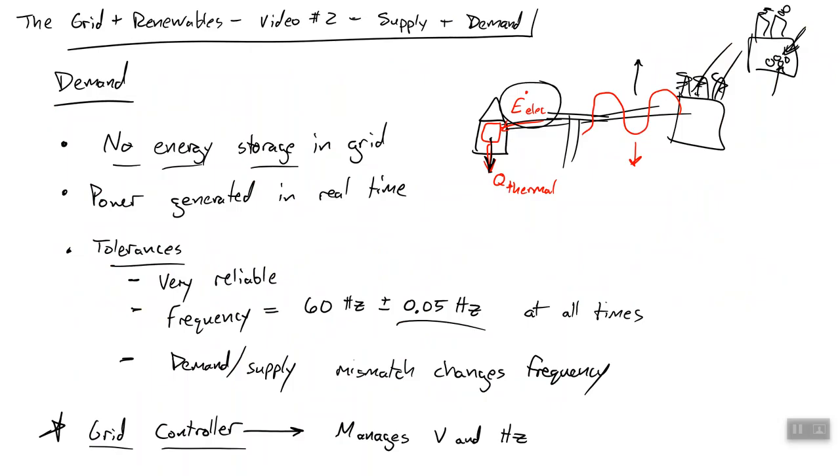Now, like we said, there's no energy storage in the grid. We need to meet that in real time. So how are we going to do that? Let's talk about the supply, the energy supply going into the grid. So like we talked about in the first video, we have different ranges of plants. We'll call the first one base generation.